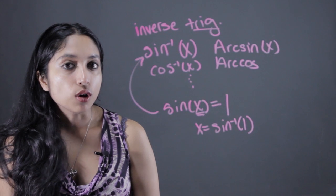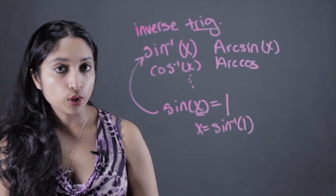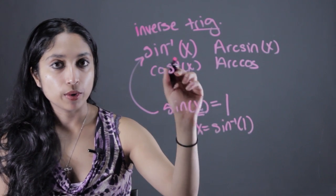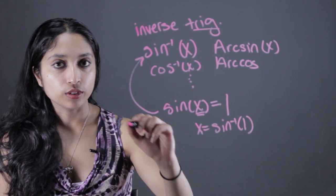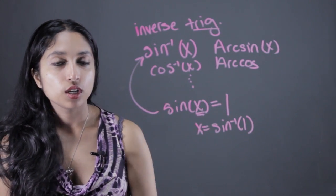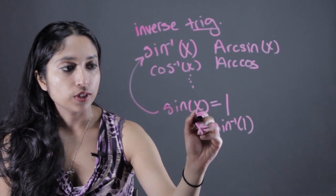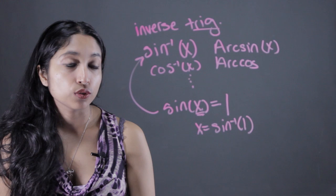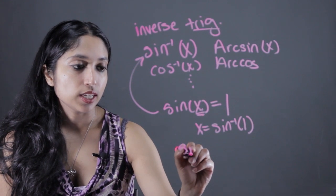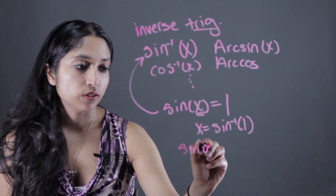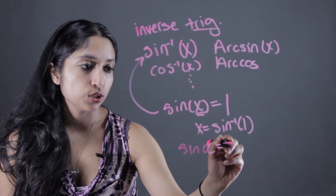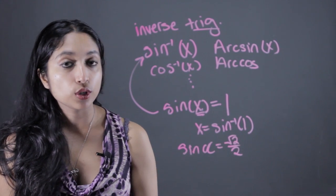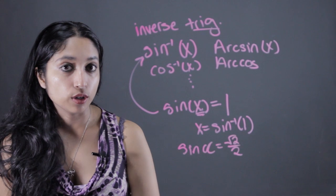You can also sometimes just look at a problem and know the answer, because when you're learning trig you have to memorize certain values for functions like sine and cosine. So for instance, if you saw sine of some angle alpha equals root 2 over 2, most people are going to know that answer is pi over 4.